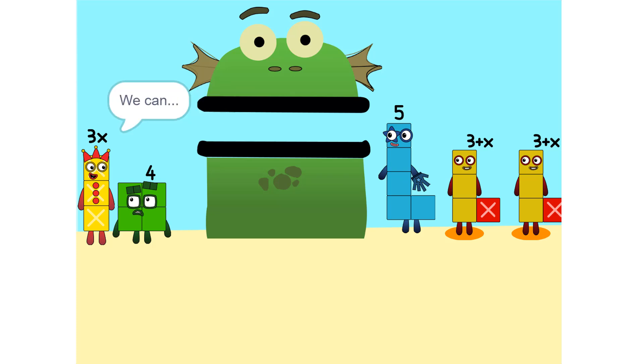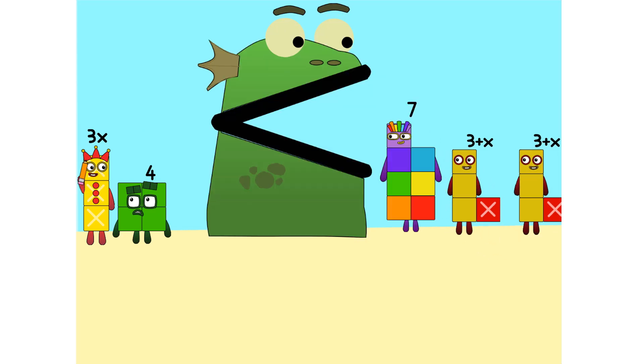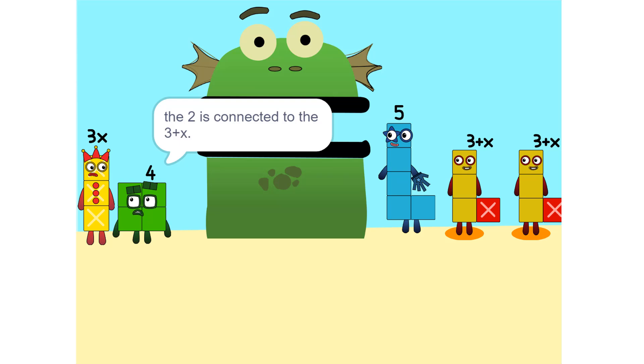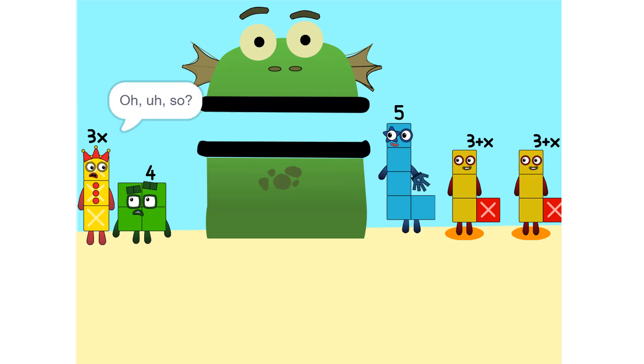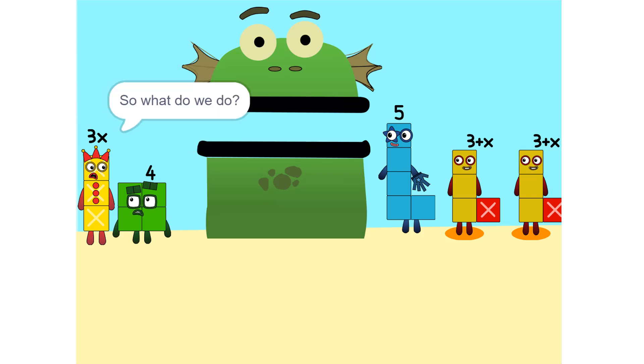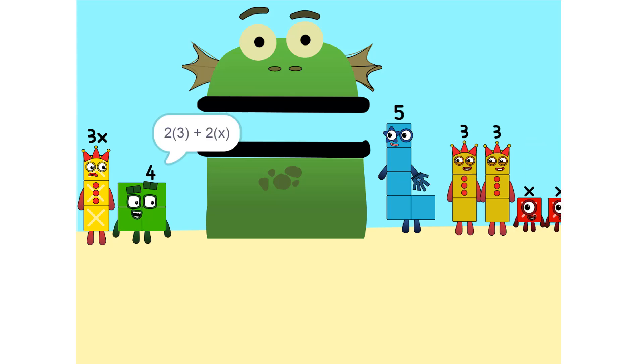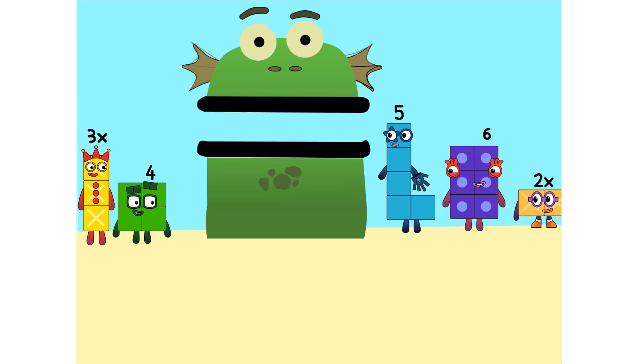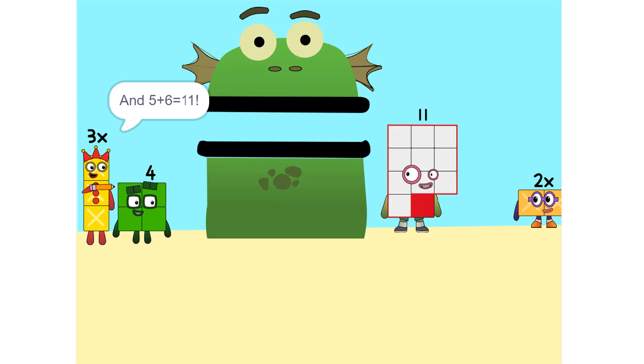I see something. We can add these together. Why did that happen? Because the 2 is connected to the 3 plus X. Oh. So? It's like adding apples and oranges. You can. So what do we do? Okay. See the 2 times 3 plus X? That's the same as 2 times 3 plus 2 times X, which is 6 plus 2X. Oh. And 5 plus 6 is 11. Yeah.